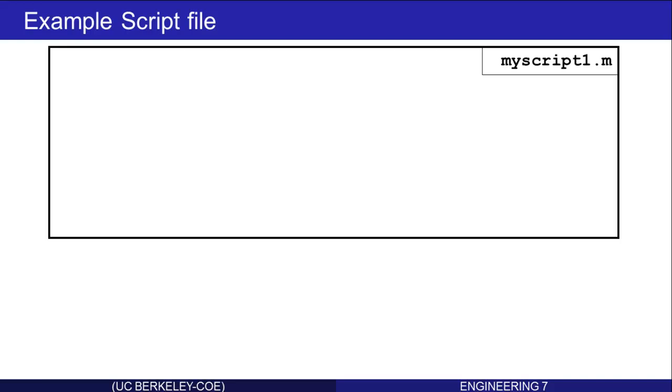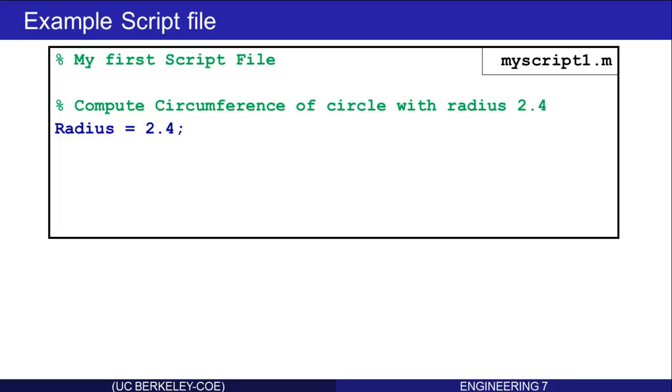Let's look at a really simple example script file to get going in this process. Here I've named it MyScript.m. Remember we mentioned all script files end with the .m extension. Here's a comment, my first script file, then another comment, compute the circumference of a circle with radius 2.4.